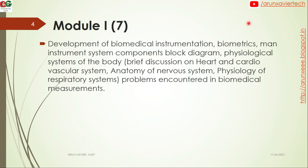The first topic we discuss is the development of biomedical instrumentation, biometrics, man-instrumentation system and block diagram, and the physiological systems of the body — that is how we study about the heart, cardiovascular system, nervous system, and respiratory system. We also discuss some problems encountered when taking biomedical measurements. That is Module 1.